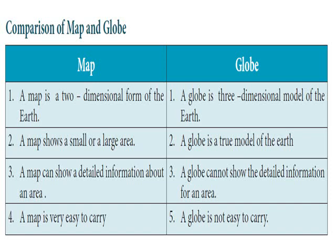Now let us compare a map and a globe. A map is a two-dimensional form of earth, shown on a flat surface. It can show small or large areas and provides detailed information; it is very easy to carry. A globe, on the other hand, is a three-dimensional model of the earth — a replica of the earth in a smaller size. A globe is a true model of the earth, but it cannot show detailed information of a specific area, and it is not easy to carry around.